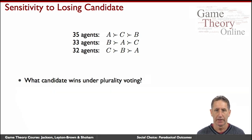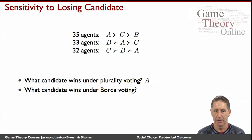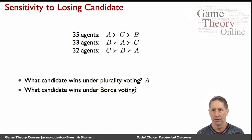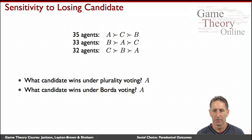Here's another example. Under plurality voting, A would win since A gets 35 votes and the second highest is B with 33. What would happen under Borda voting? This takes a little more thinking, but A would also be the winner under Borda — A, B, and C each appear in positions one, two, and three, with A appearing with the largest number of agents in the higher positions. So A would have the highest Borda count and would win too. This looks very good.